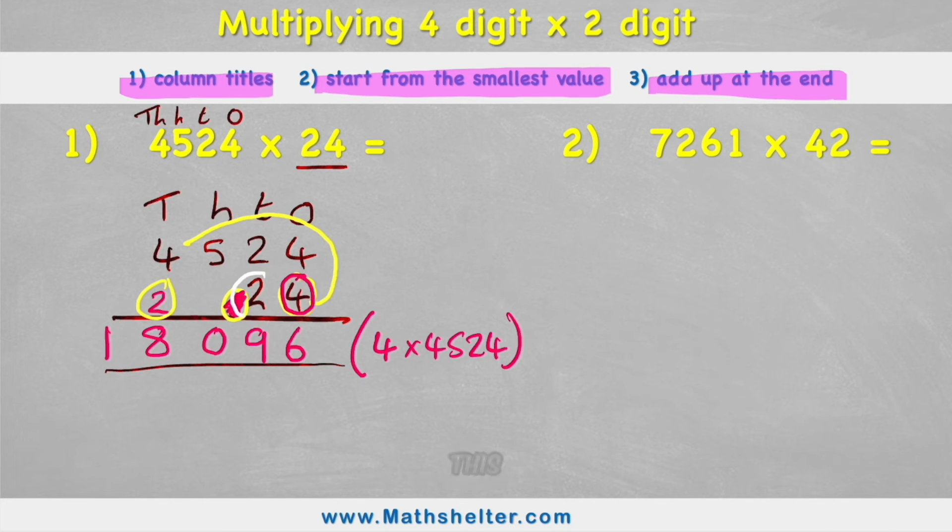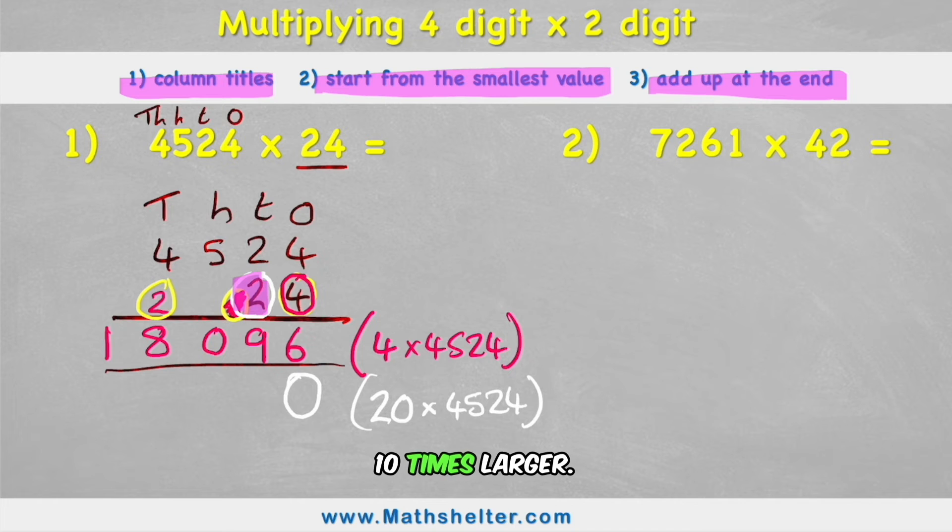Because I've used this four to multiply by the top row. So the next question will be using this two. But remember it's not a two because it's in the tens column. It's actually a 20. So this row will be solving 20 times 4524. So looking at this two first of all we need to understand that it's actually a 20. So therefore if I just want to multiply 2 times 4, 2 times 2, 2 times 5 and 2 times 4, and 20 is 10 times larger than the two that I want to deal with. So I'm going to put a zero here which will make everything in this row now 10 times larger.